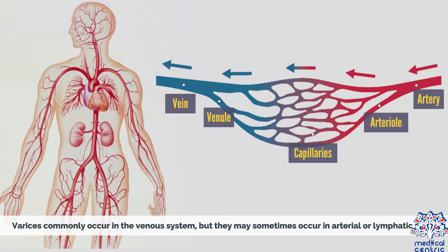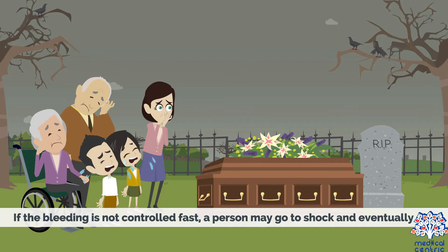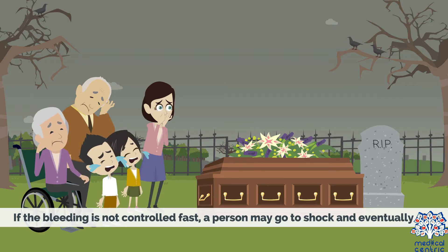Varices commonly occur in the venous system, but they may sometimes occur in arterial or lymphatic vessels. The most common site of varices is the esophagus, although they can appear at other sites in the gastrointestinal tract, such as the stomach, rectum, or around the belly button. If the bleeding is not controlled fast, a person may go into shock and eventually die.